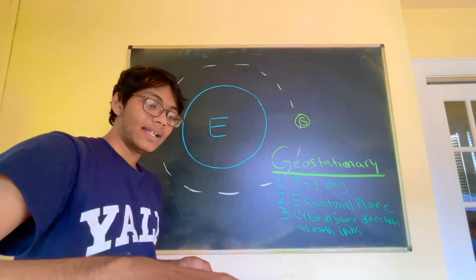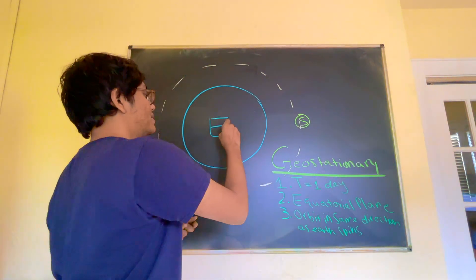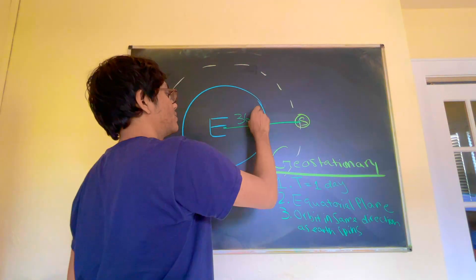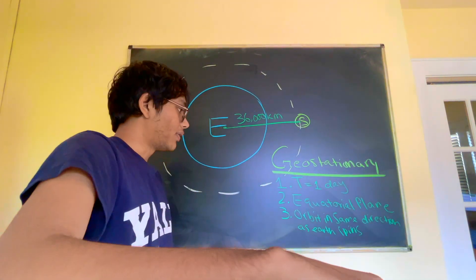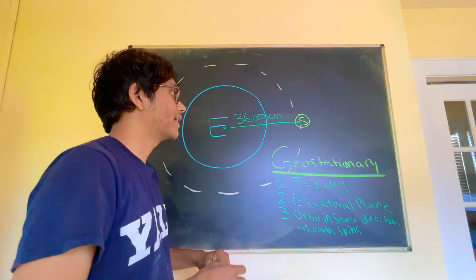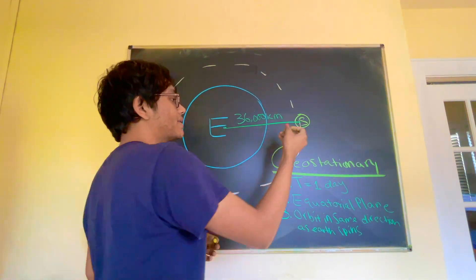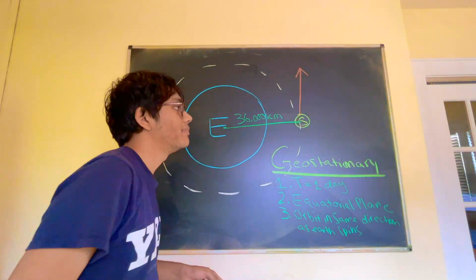So, the final condition and the implicit condition is that they are circular. These are the three, or the four, if you want to count the circular part of a geostationary satellite. And geostationary satellites typically orbit about 36,000 kilometers from the Earth.